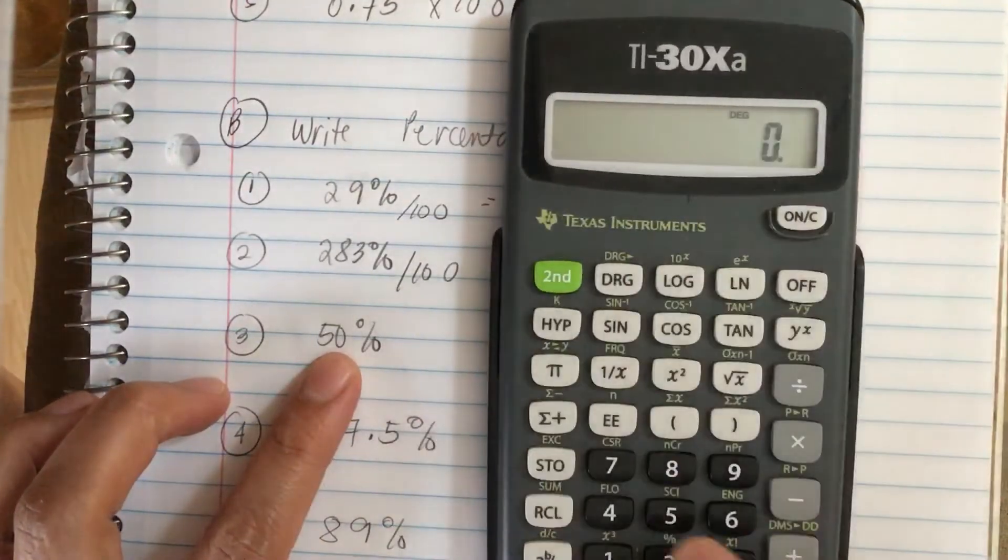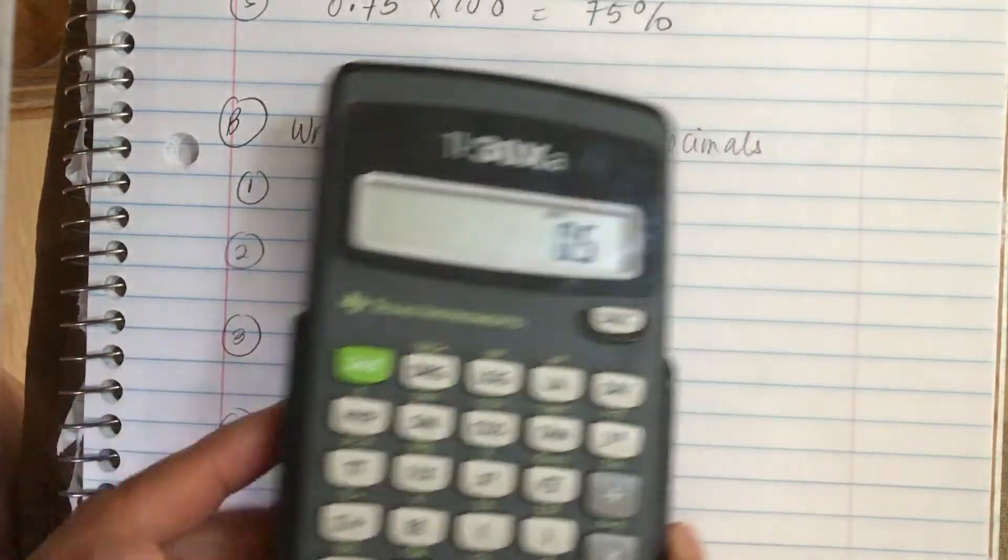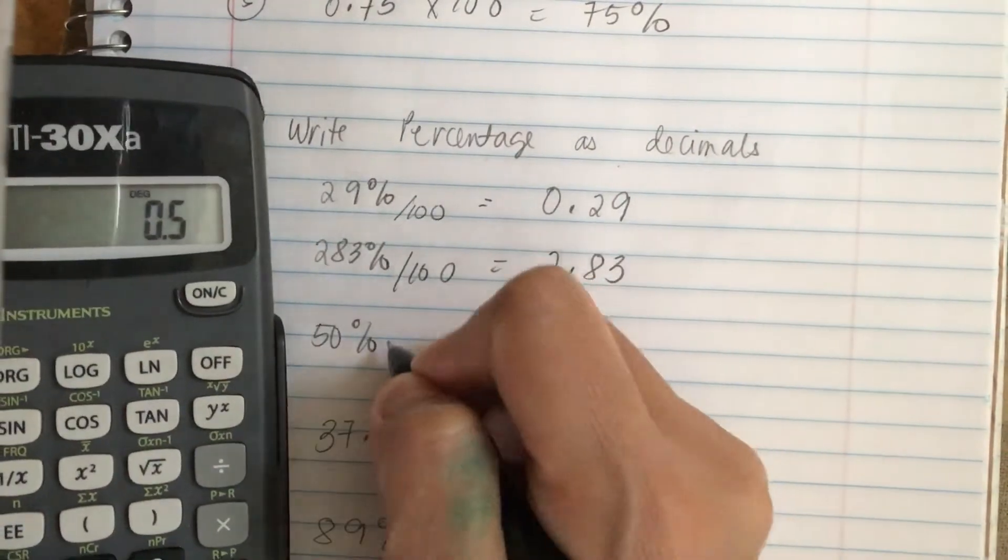So now 50 percent. Now we have to divide by 100 and we get 0.5.